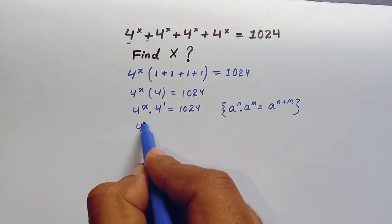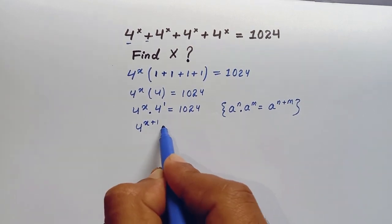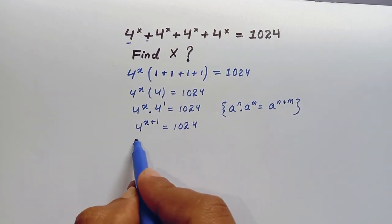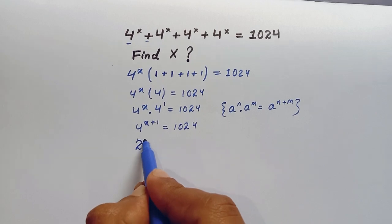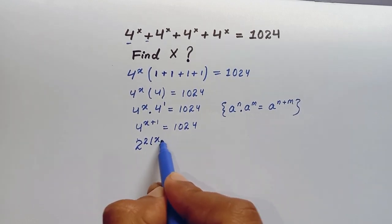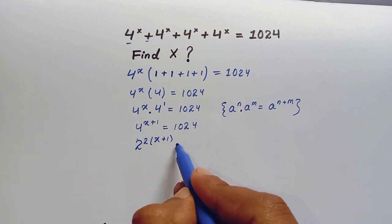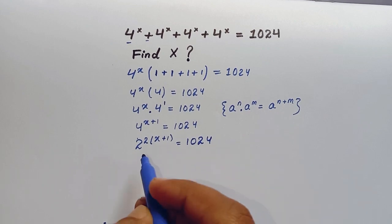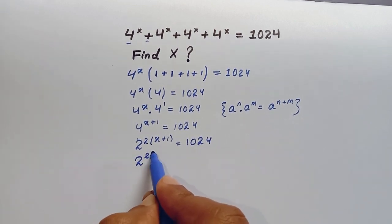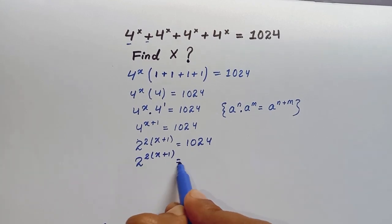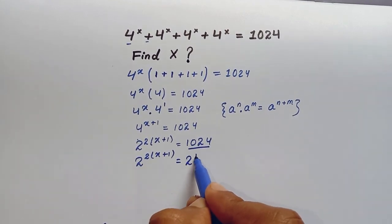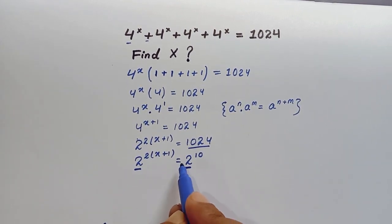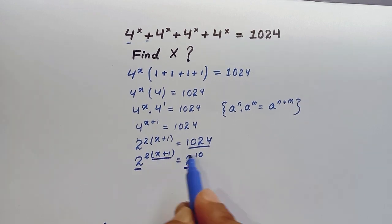So this becomes 4 to the power x plus 1, which equals 1024. Now 4 can be written as 2 to the power 2, so we have 2 to the power 2 times x plus 1 equals 1024, which can be written as 2 to the power 10. Since the bases are the same, we can compare the values of the powers.